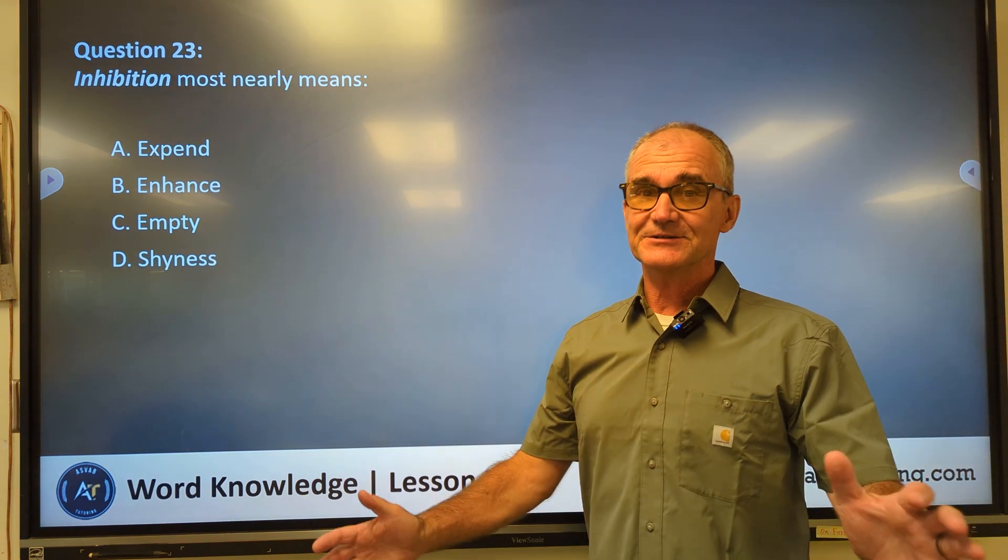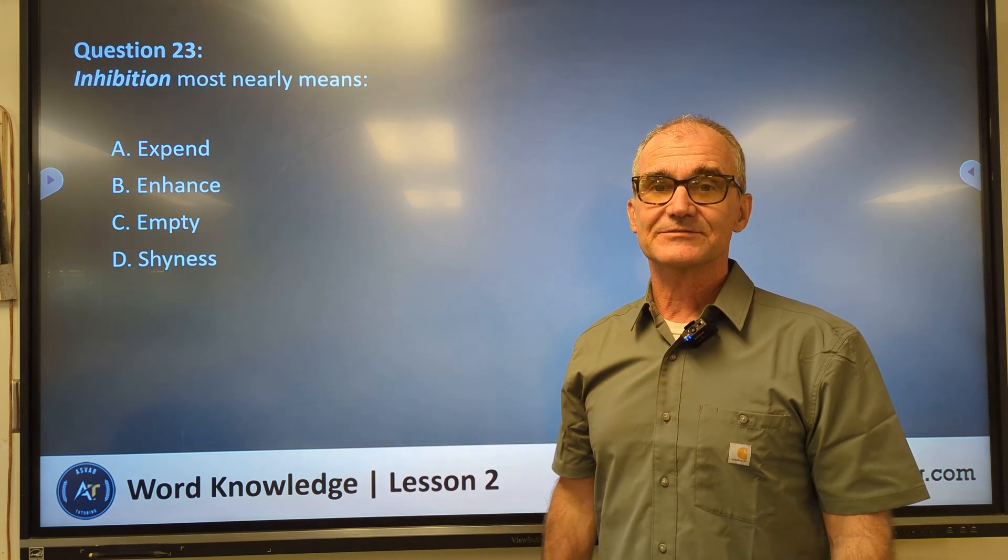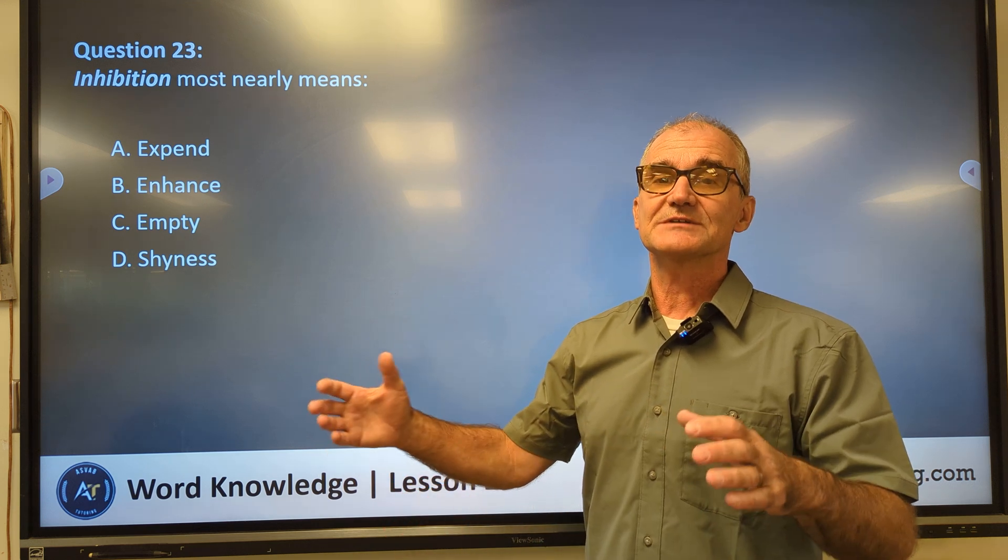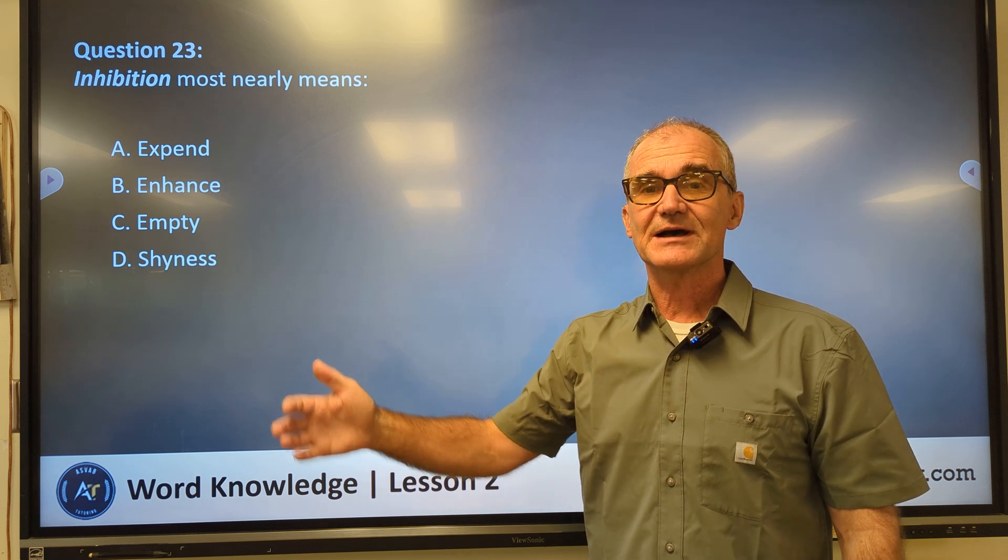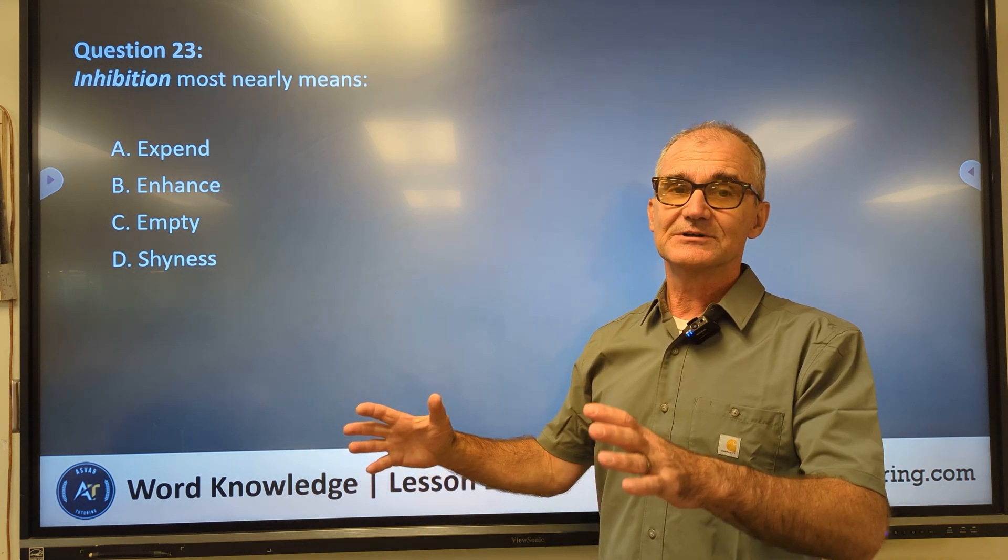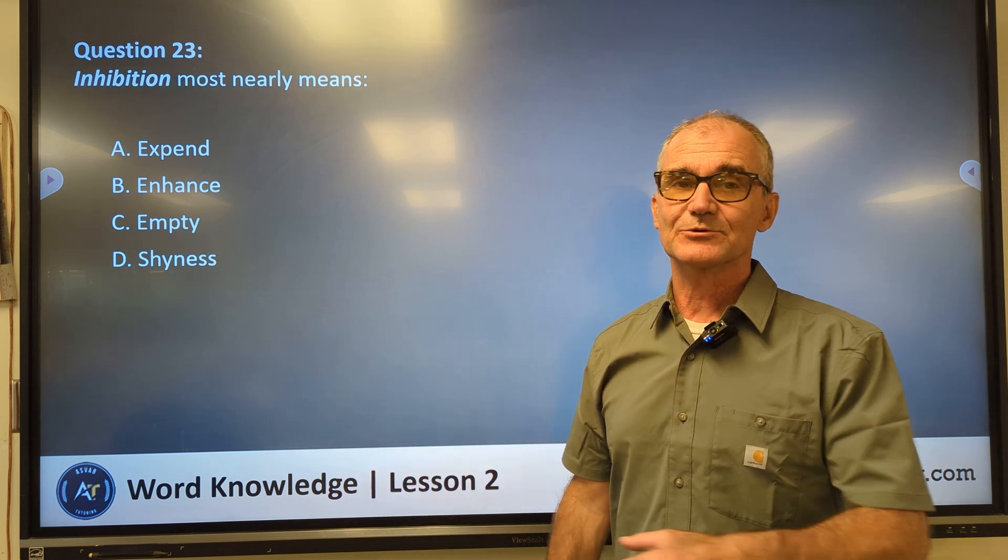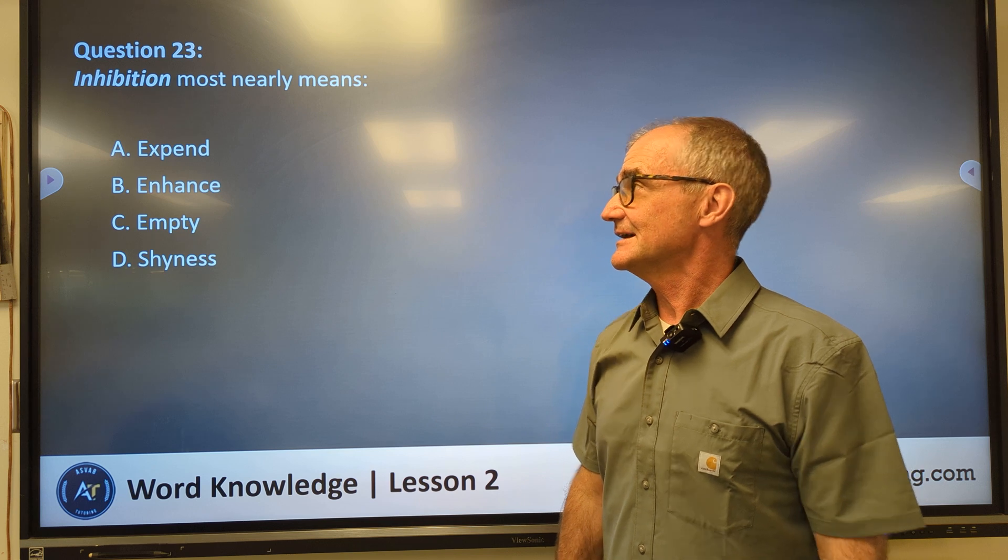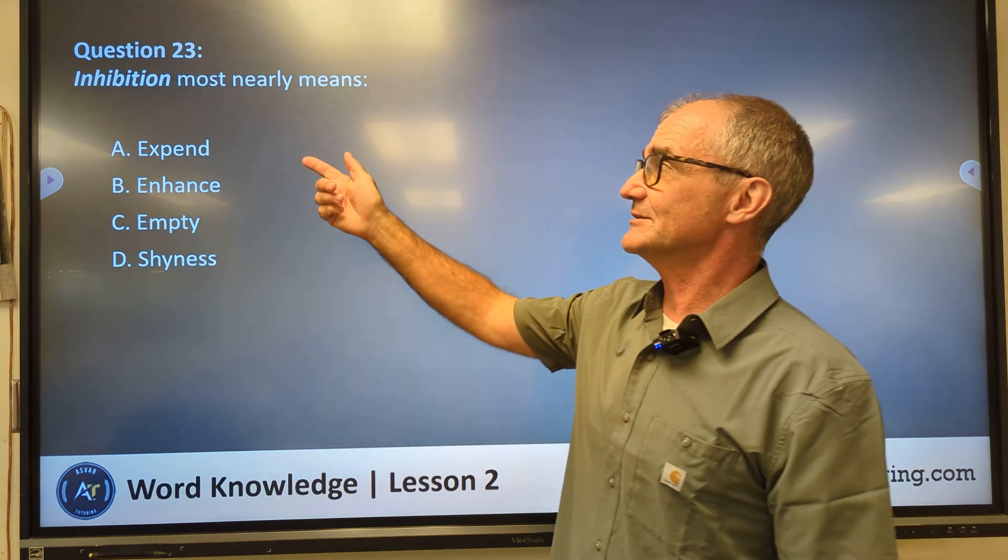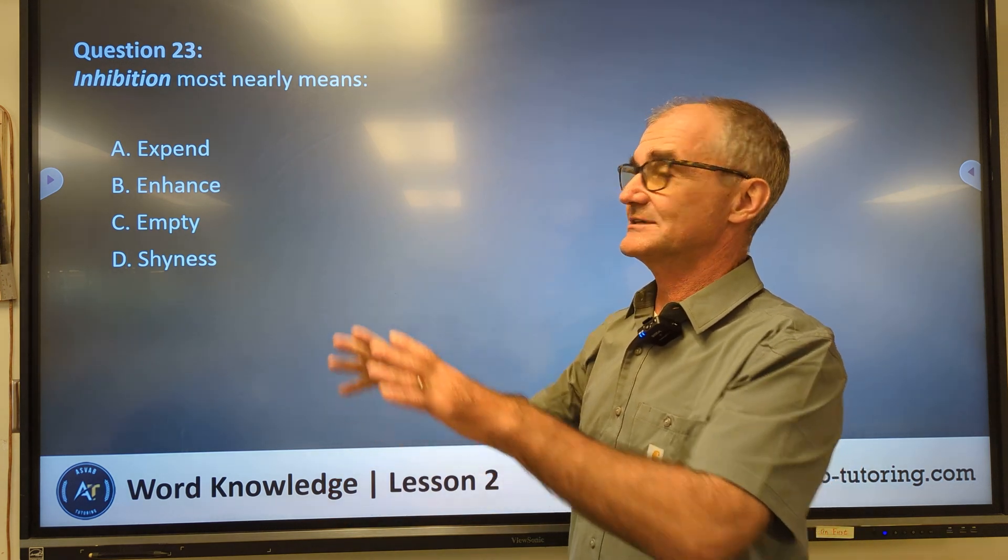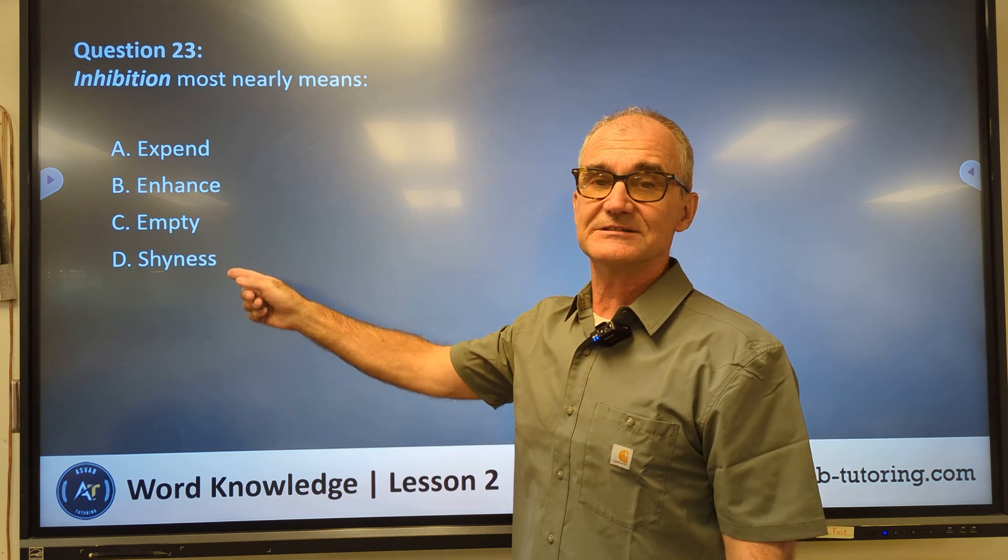Number 23, if you're new to the channel, think about subscribing, share it with anybody else you might know who's interested in studying for the ASVAB. A little bit of work up front will really boost that score. I have some playlists that'll help you work your way through things systematically, especially in mathematics. I teach high school math and woodshop. Math is kind of my strength, but I've had so many requests for word knowledge, I'm putting a video out on this. All right, number 23, inhibition most nearly means in, again, one of those prefixes. Inhibition means you're scared to go out. You're scared to come out of your shell. So correct answer, D, shyness.